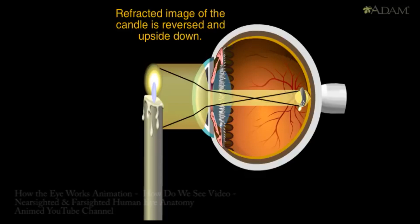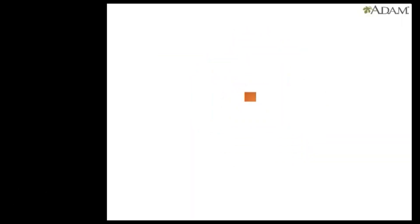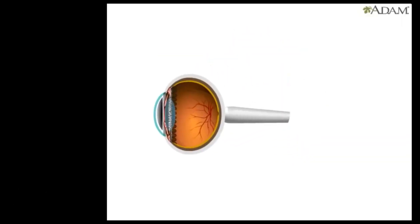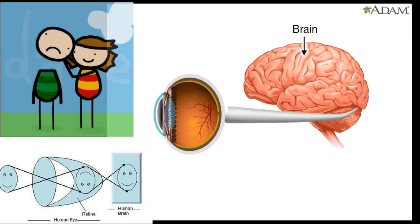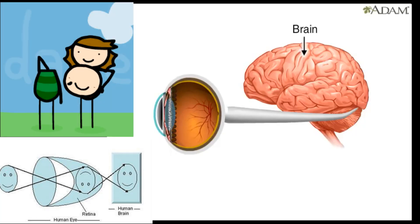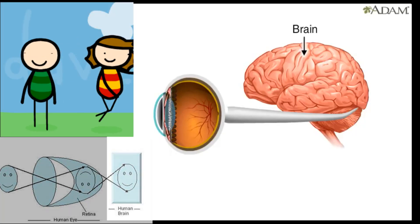Researchers believe that once this image reaches the occipital lobe, the brain turns the image back over for proper perspective — in theory.